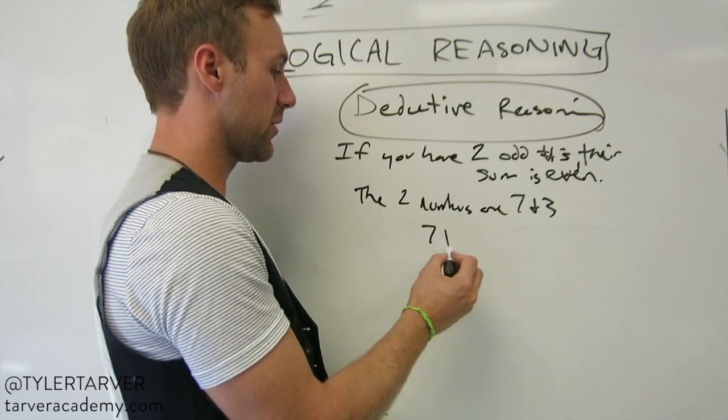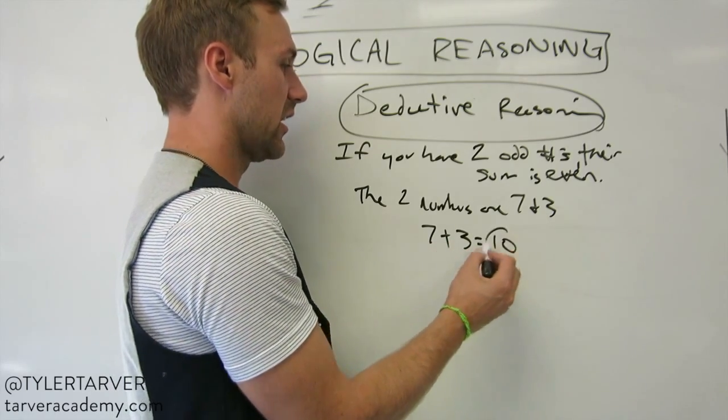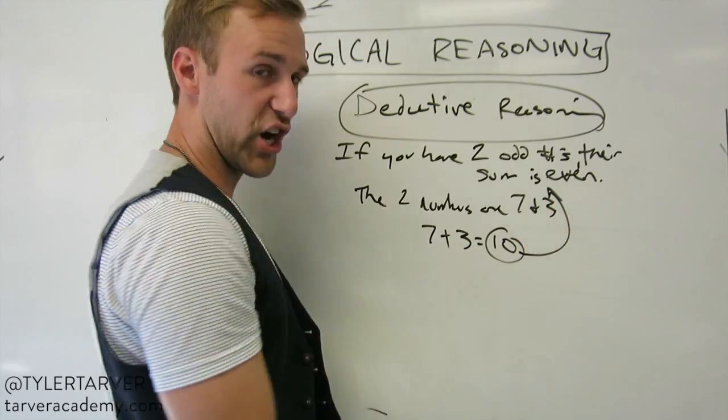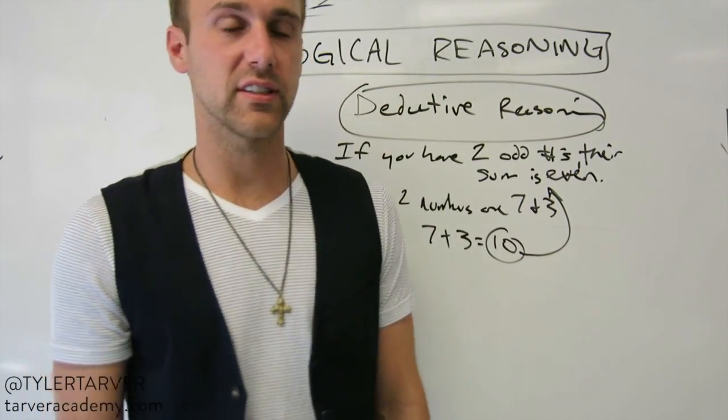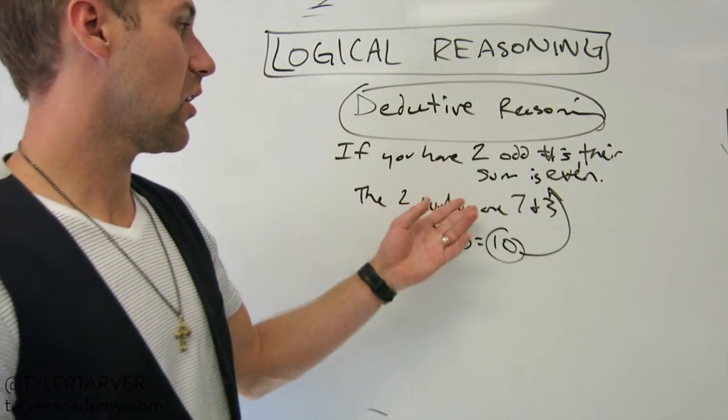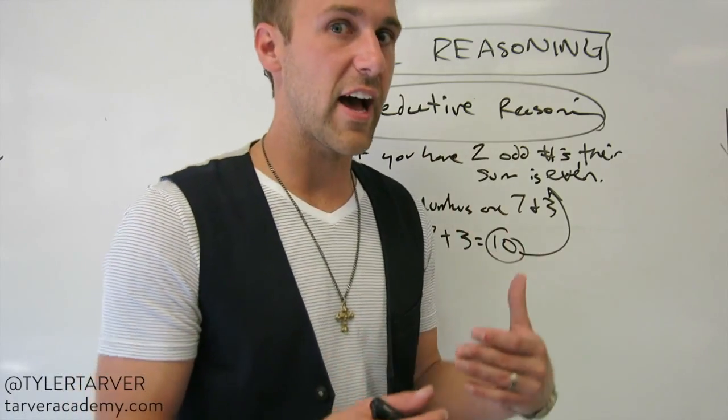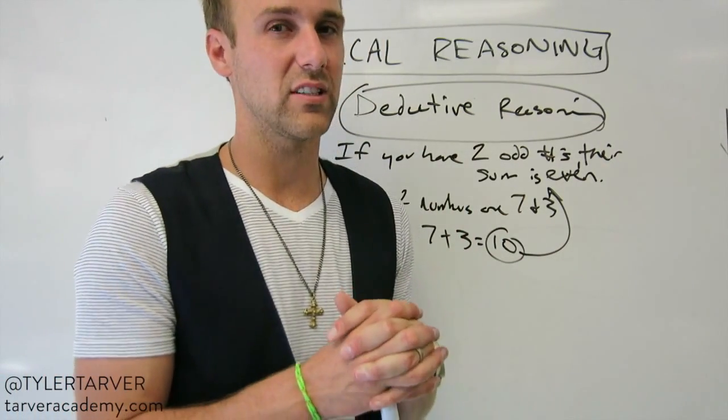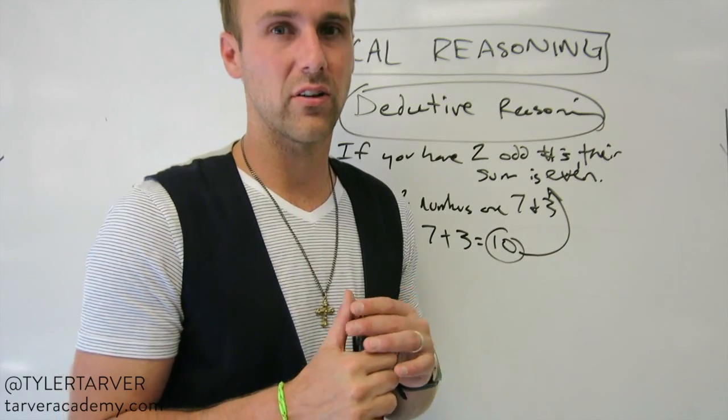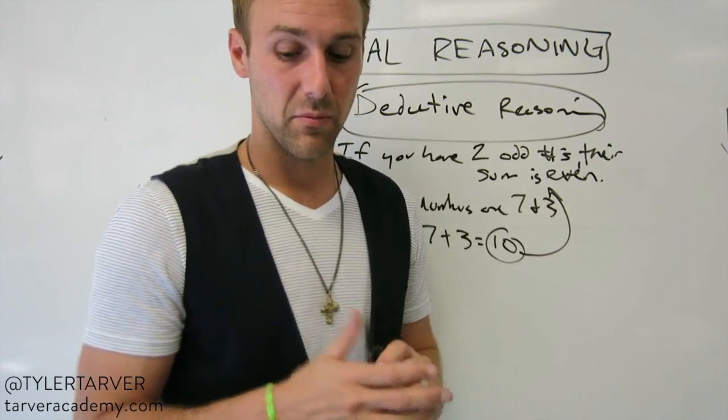Two numbers are seven and three. Those are two odd numbers. Seven plus three equals ten. Is ten an even number? Cha! Every day of the week almost. That's correct. Okay? So I use my deductive reasoning to say, oh, these are correct for this. I use facts to lead to my conclusion. Okay? And that's the simple version of deductive reasoning. I've also got a video on deductive reasoning that focuses a little more in depth. But that's pretty much that.